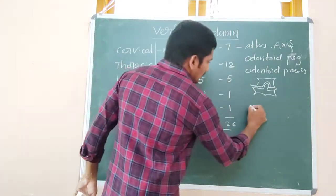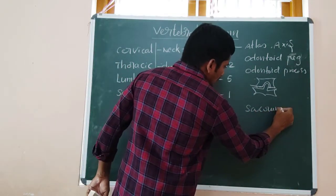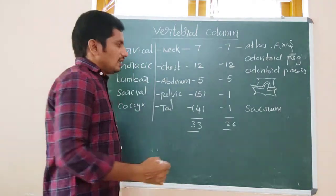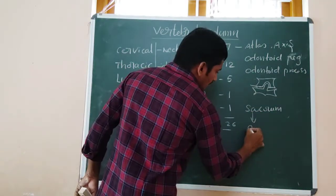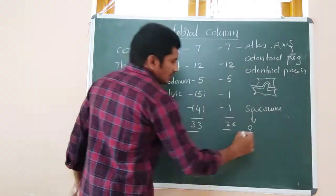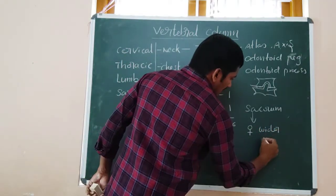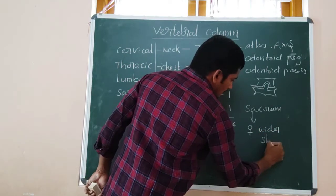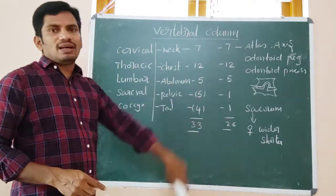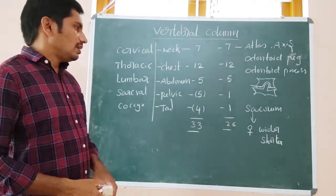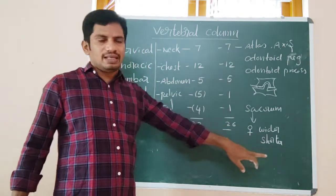The sacrum differs between males and females. When comparing male and female, in females the sacrum is wider and shorter than in males. So the sacrum is wider and shorter in females than in males.